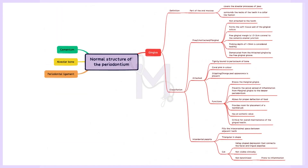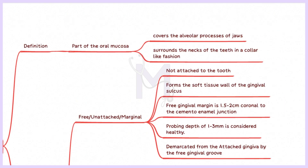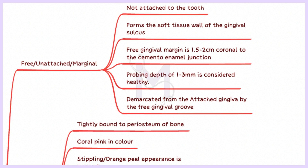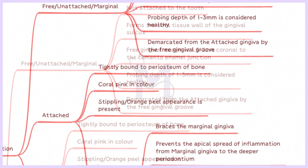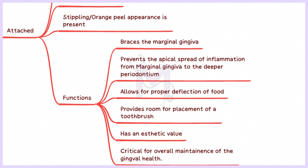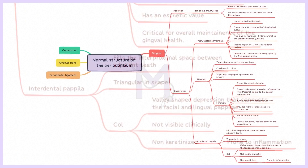Before you get started with another topic, let's quickly revise using the mind map. The normal periodontium consists of gingiva, periodontal ligament, cementum and the alveolar bone. The gingiva covers the alveolar process of the jaw and surrounds the neck of the teeth in a collar-like fashion. It is classified as free gingiva, attached gingiva and the interdental papilla. The free gingiva forms the soft tissue wall of the gingival sulcus, with its margin 1.5–2 mm coronal to the CEJ; normal probing depth is 1–3 mm. The attached gingiva is tightly bound to the periosteum, is coral pink in colour and shows stippling. The interdental papilla fills the interproximal space and is triangular in shape. A valley-shaped depression called the col connects the facial and lingual papilla; it is not visible clinically, is non-keratinized and therefore more prone to inflammation.